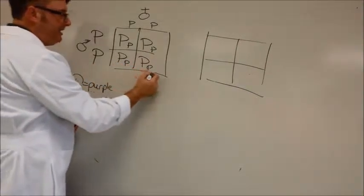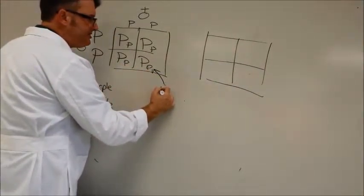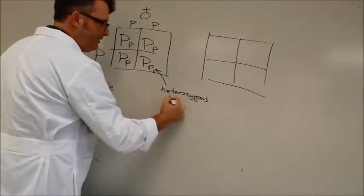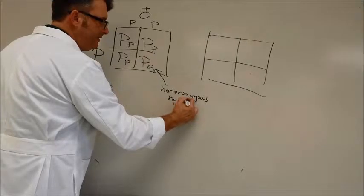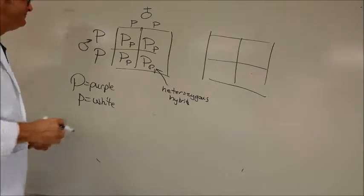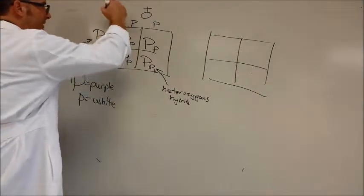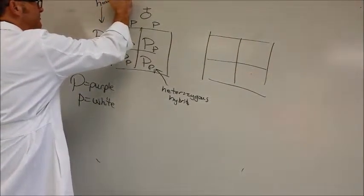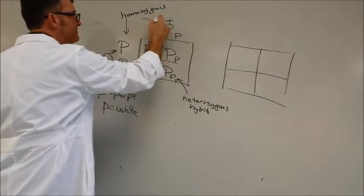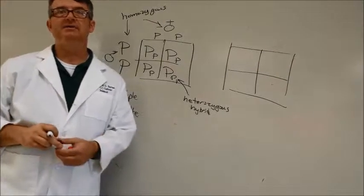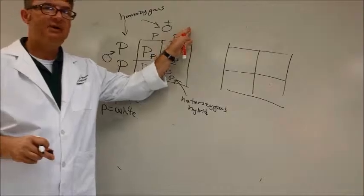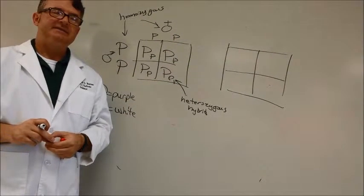Now, the thing that can be noticed, though, is these are heterozygous. And some people would call these a hybrid. Some people would call this a mutt. The parents were both homozygous. That means they have two of the same alleles for the trait that they're offering here. In this case, purple. In this case, white.